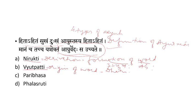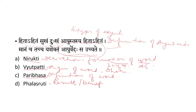The third option is Paribhasha. Paribhasha is a Sanskrit term meaning terminology or definition — the definition of a word. So I think you got the answer. We have to find out what is the definition of Ayurveda; the definition of Ayurveda is stated in this sloka. The fourth option is Phalashruti, which means the result or benefit. Now we know the four options, so it is easy to find the answer.